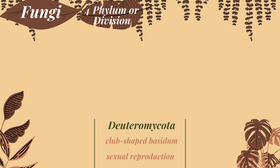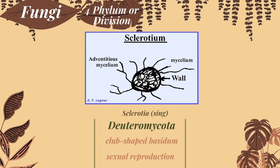The last division is Deuteromycota — a large division of fungi that appear to reproduce only asexually, lumped together and called imperfect fungi, as they do not possess sexual structures like other fungi. An example of Deuteromycota is Chlorosis.